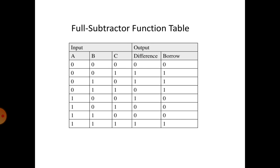For 0-0-0: difference is 0, borrow is 0. For 0-0-1: difference is 1, borrow is 1. For 0-1-0: difference is 1, borrow is 1. For 0-1-1: difference is 0, borrow is 1. Similarly for 1-1-1: difference is 1, borrow is 1.